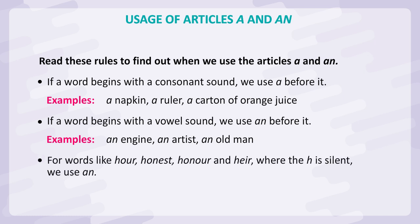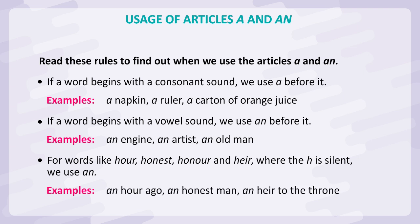For words like hour, honest, honour, and heir, where the h is silent, we use an. Examples: an hour ago, an honest man, an heir to the throne.